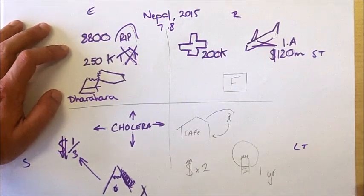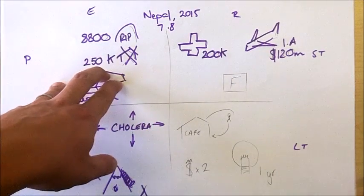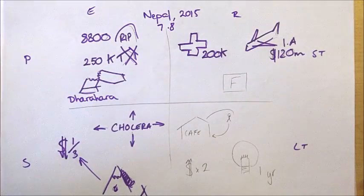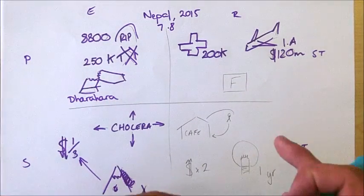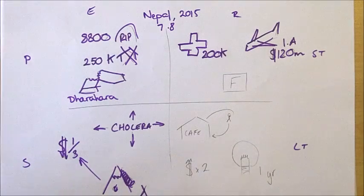You can obviously make the direct link there between the much larger number of buildings destroyed due to the poor building quality and regulations in Nepal. Again, that reliance in terms of short-term aid on international organizations is shown.